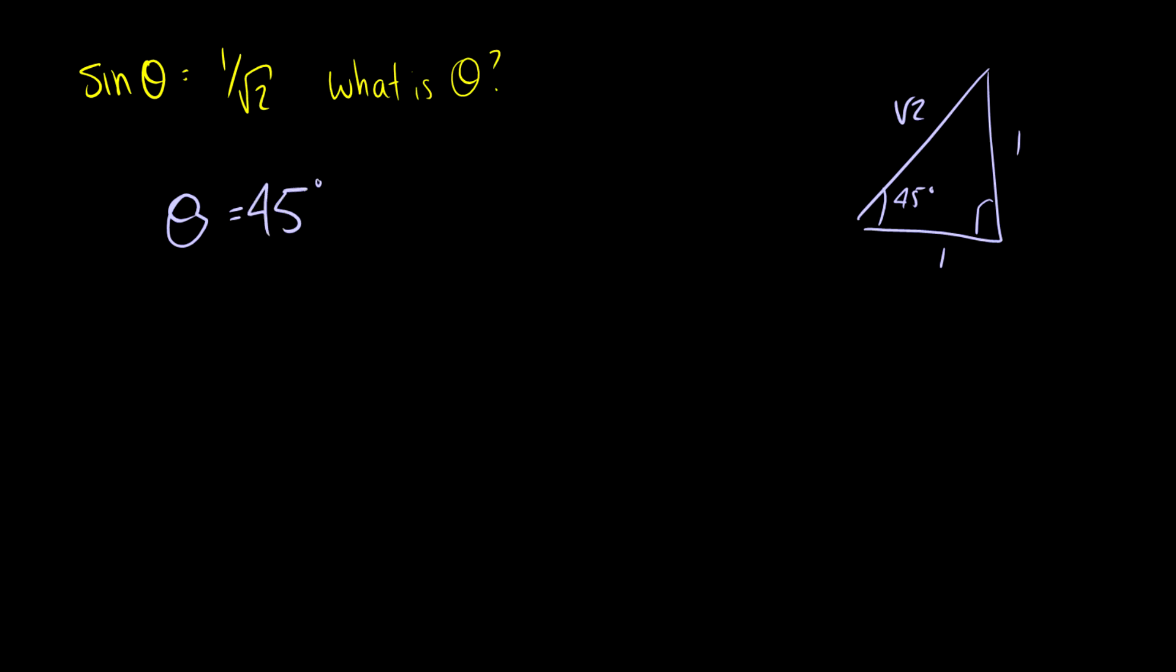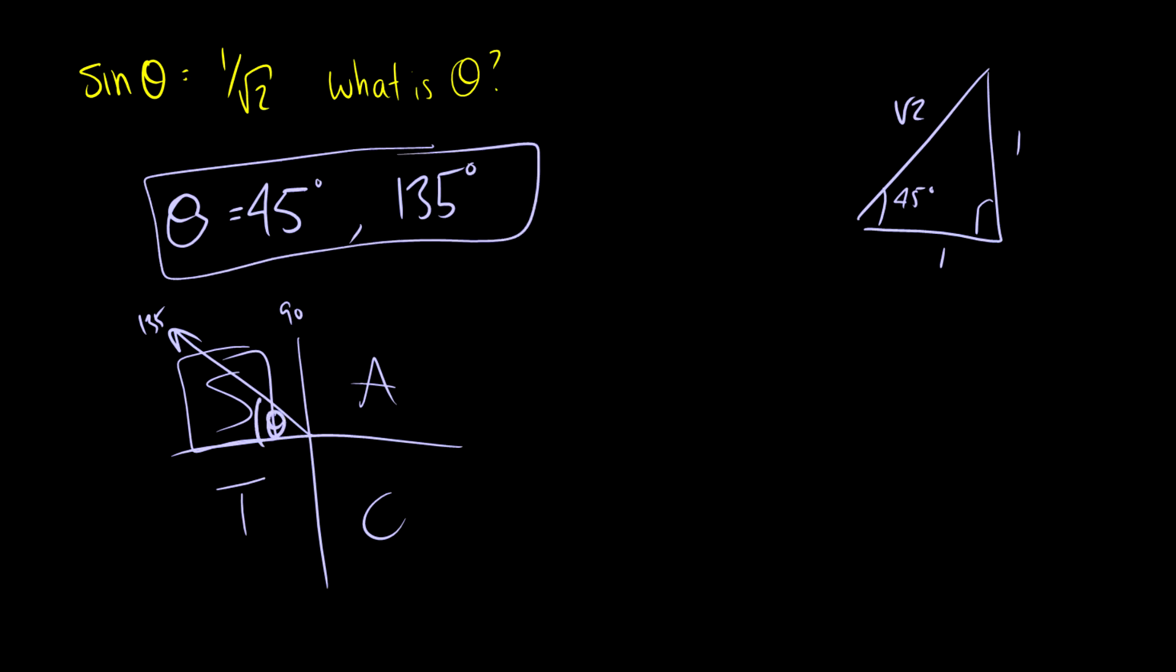So now that we know it's 45 degrees, we should ask, well where else is sine positive? So let's draw our little chart here. CAST. Oh it's also positive in quadrant 2. So this would have to be 90 plus 45 degrees. So that's also going to be at 135 degrees there. So again you take the reference angle there. This reference angle is also going to be 45 degrees. So we just need to figure out what number that angle is. So sine is positive 1 over root 2 at 45 degrees and at 135 degrees.